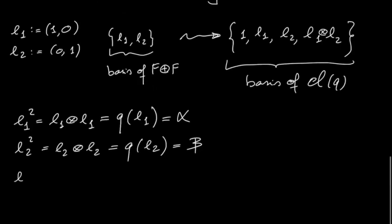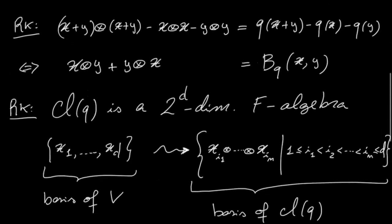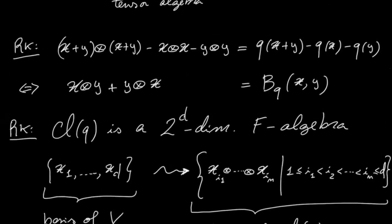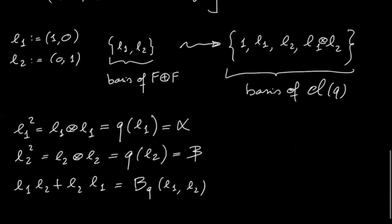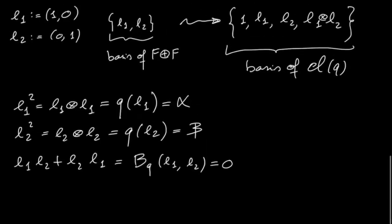and then also we have this relation e1 e2 plus e2 e1. You know that it's equal to the evaluation of the quadratic form at e1, e2, as we have observed in this remark. So the evaluation of quadratic form gives us the anticommutativity, so you see here that this is actually equal to zero because I've chosen two orthogonal vectors, so they anticommute, these generators.